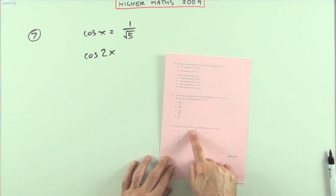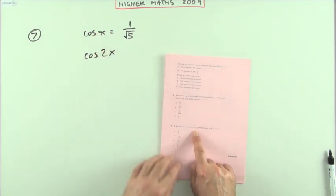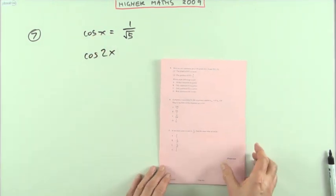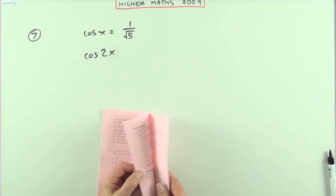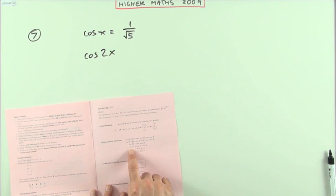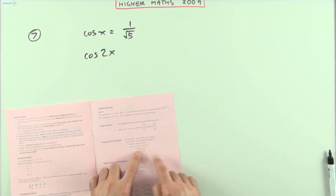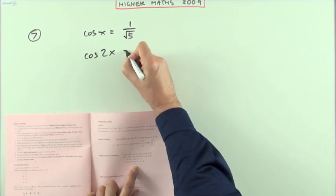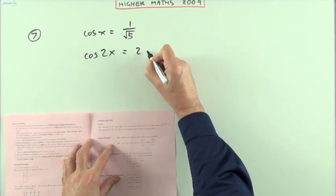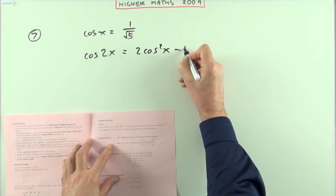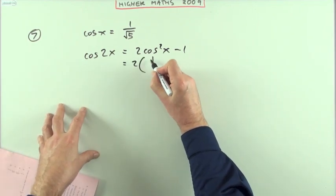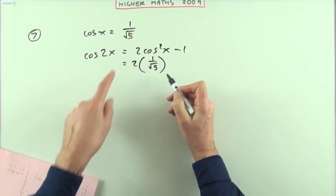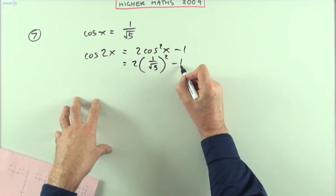Number 7. It gives you the exact value of cos(x), and it wants the exact value of cos(2x). Well, you won't need a triangle in this case, because when you look up cos(2x), it has a form that only involves cosine, so that's the one you would use. Cos(2x) = 2cos²(x) - 1. So that's going to be 2 times (1/√5) squared minus 1.